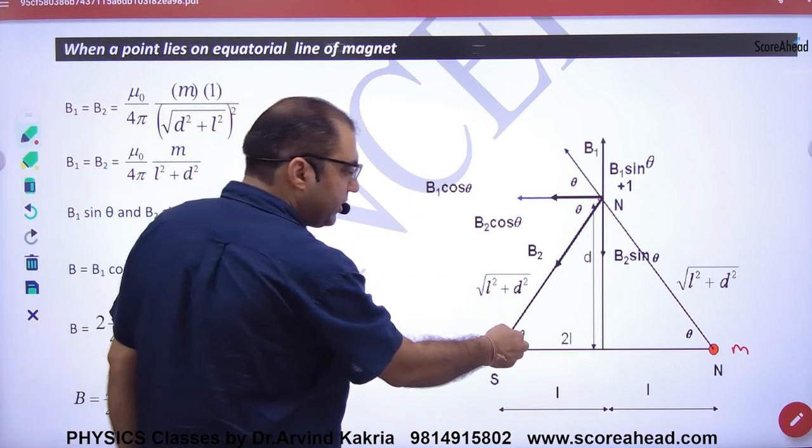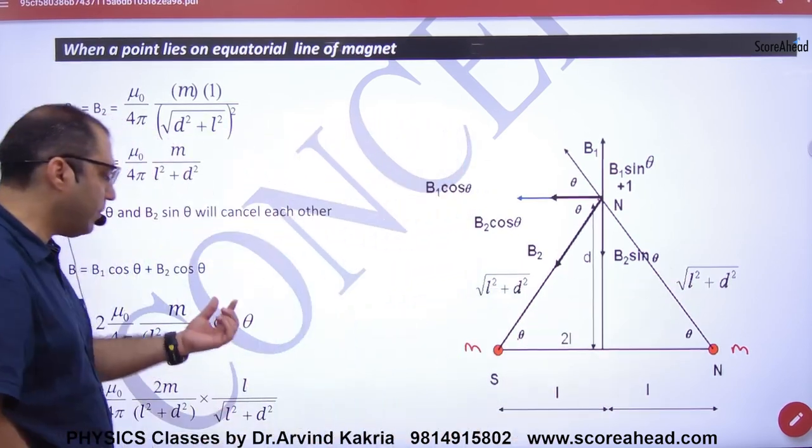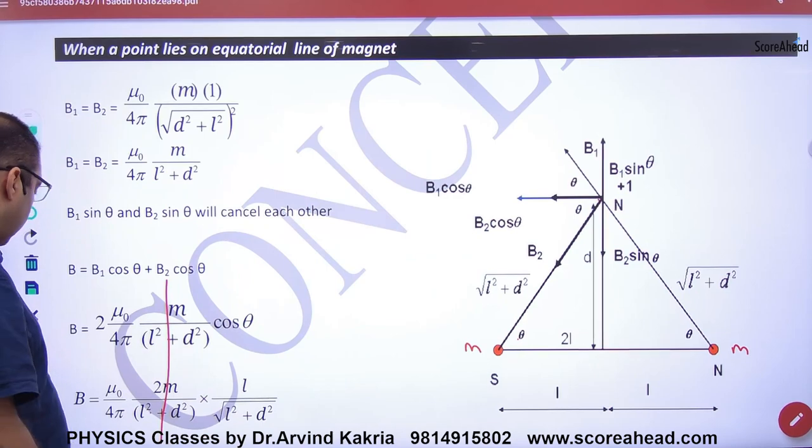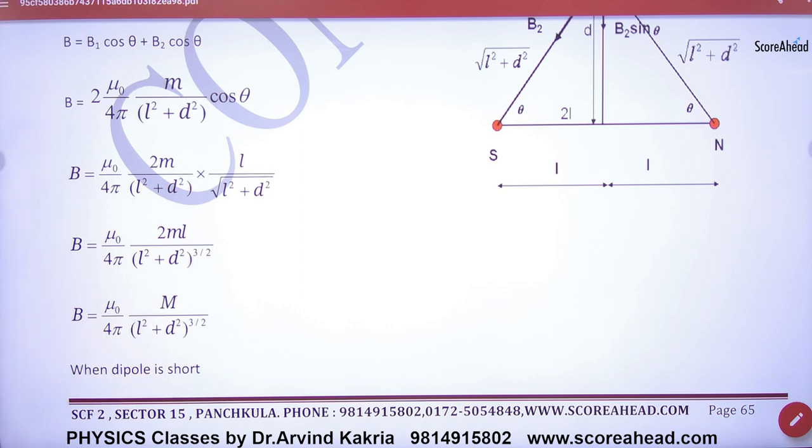Now, what will cos of theta be in this triangle? L upon under root of L square plus d square. If you multiply them, raise to power 3 by 2. M into 2L equals capital M. So this is B value on the equatorial line.